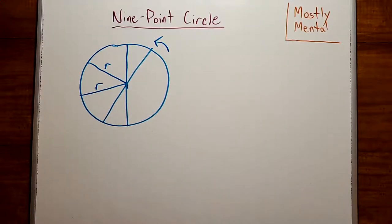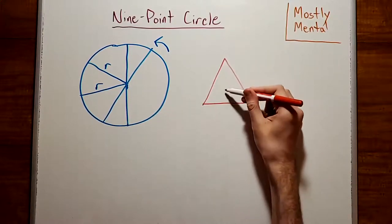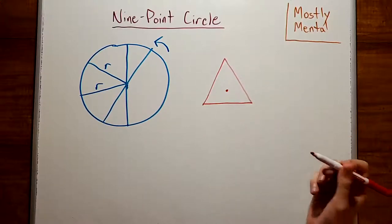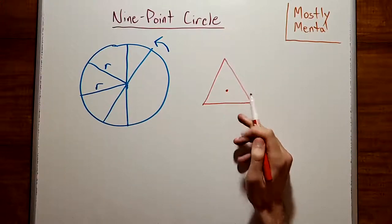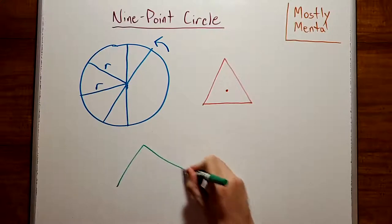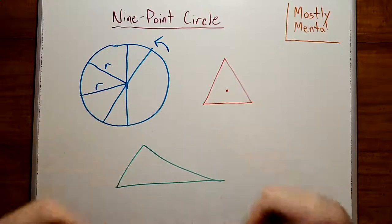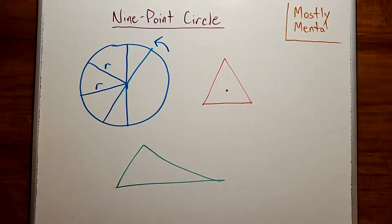Now for a more interesting question: what's the center of a triangle? For an equilateral triangle, that's easy to answer — there's only one point that really makes sense, and it turns out it's also the center of symmetry. But what about the more general triangle? It turns out there isn't just one answer. There are thousands of points that could make a claim at being the center, and I've linked a whole encyclopedia of them below. But for our purposes today, there are four of particular interest.